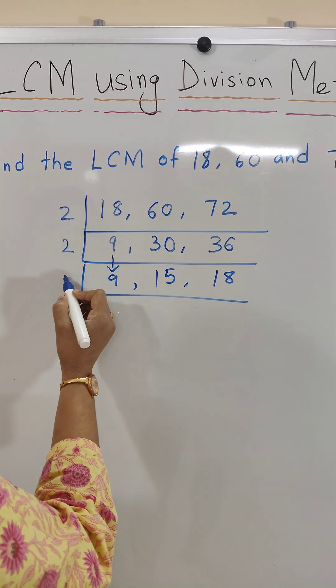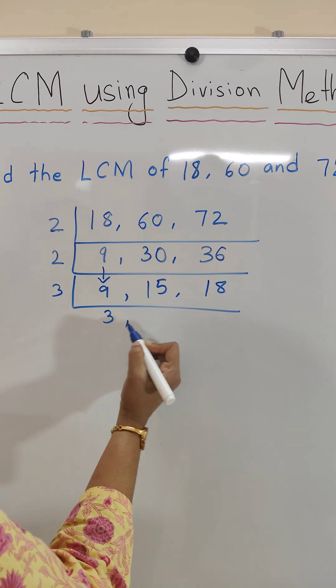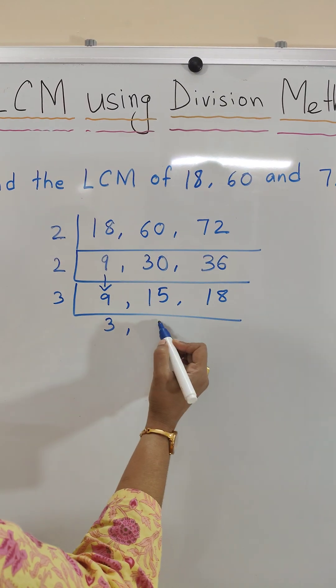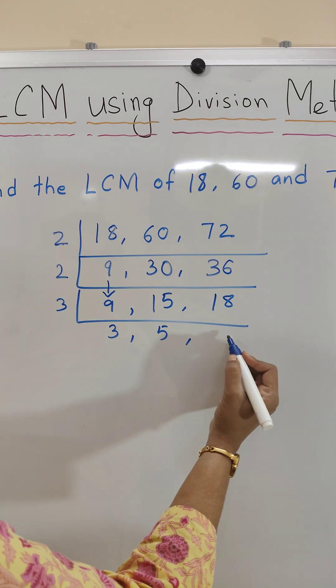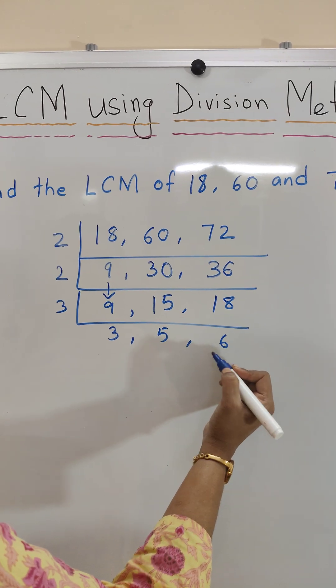Let's take the next prime number 3. 9 divided by 3 is 3, 15 divided by 3 is 5, 18 divided by 3 is 6.